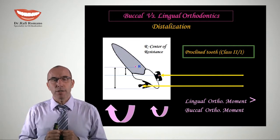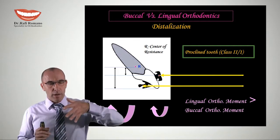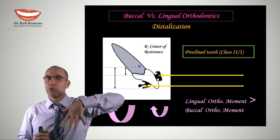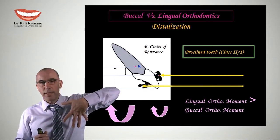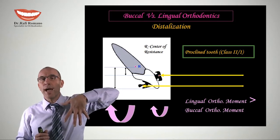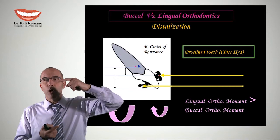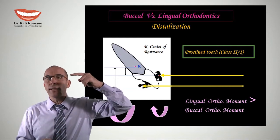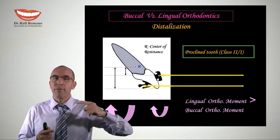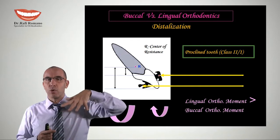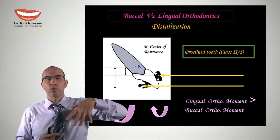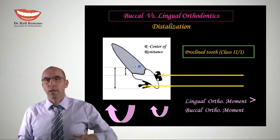What are the clinical implications? When we apply a force to Class II division 1 proclined teeth, we often use round wires in order to retrocline the tooth. In lingual orthodontics we must take into consideration that the retroclination moment is now two or even three times bigger for the same magnitude of force. That is why we almost never close spaces or retrocline teeth in lingual orthodontics on round wires — we do it on rectangular wires in order to maintain good torque control while retroclining the tooth.